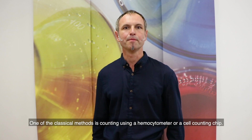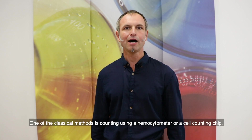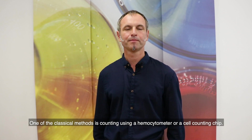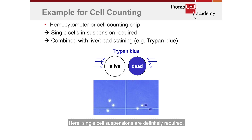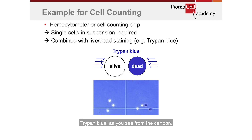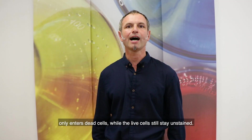One classical method is counting using a hemocytometer or a cell counting chip. Single-cell suspensions are definitely required; otherwise, if you still have aggregates, you would underestimate your cell count. This technique is often combined with a live/dead stain like trypan blue, which only enters dead cells while live cells remain unstained.